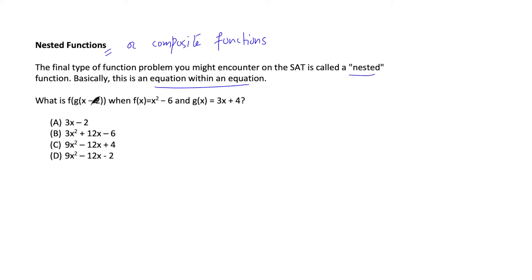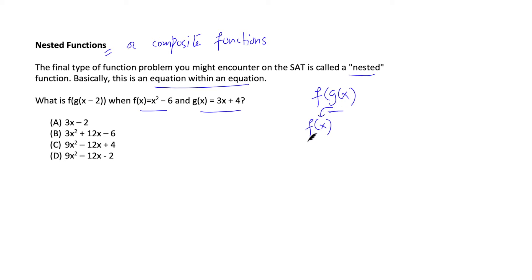Let's look at this example: what is f(g(x)) when f(x) = x² − 6 and g(x) = 3x + 2? First, to find f(g(x)), we replace x in f(x) with g(x). That's it — wherever you see x in f, substitute g(x) instead.